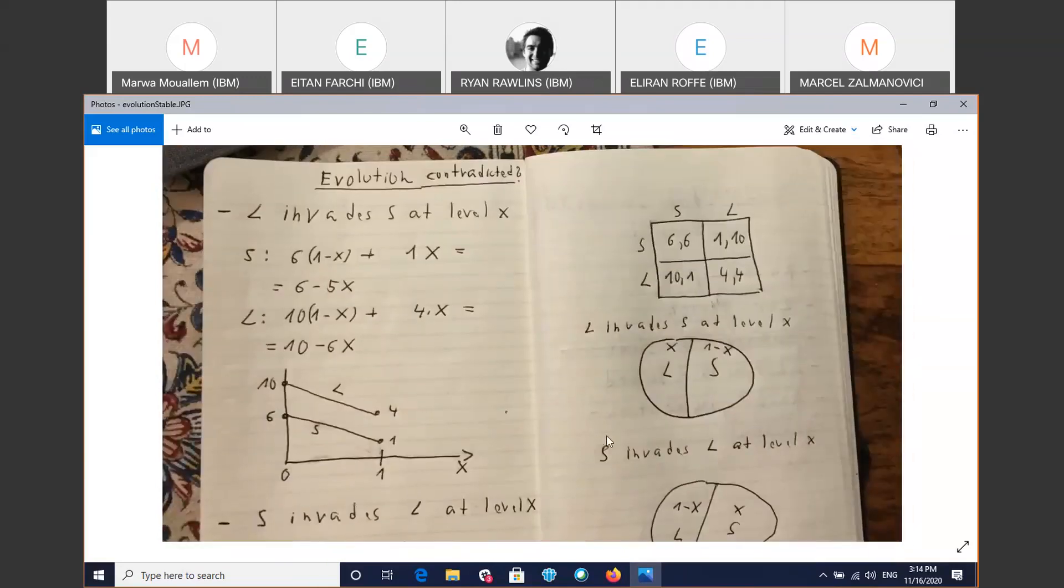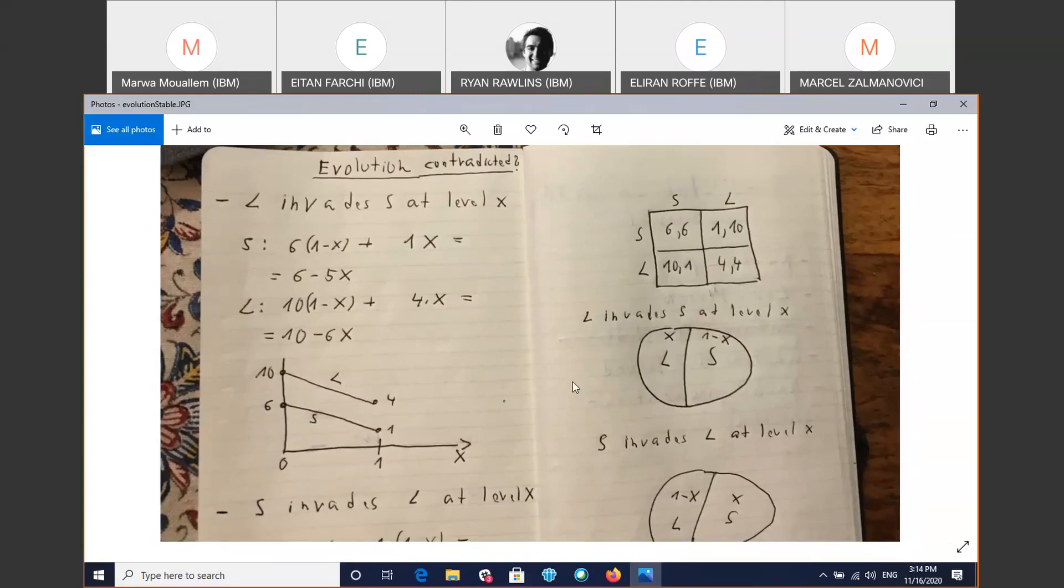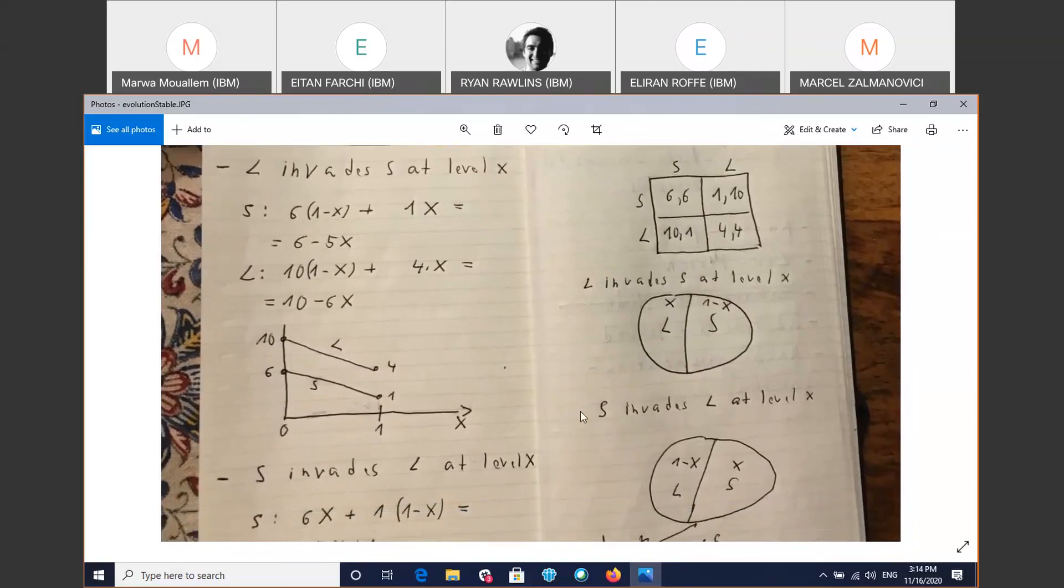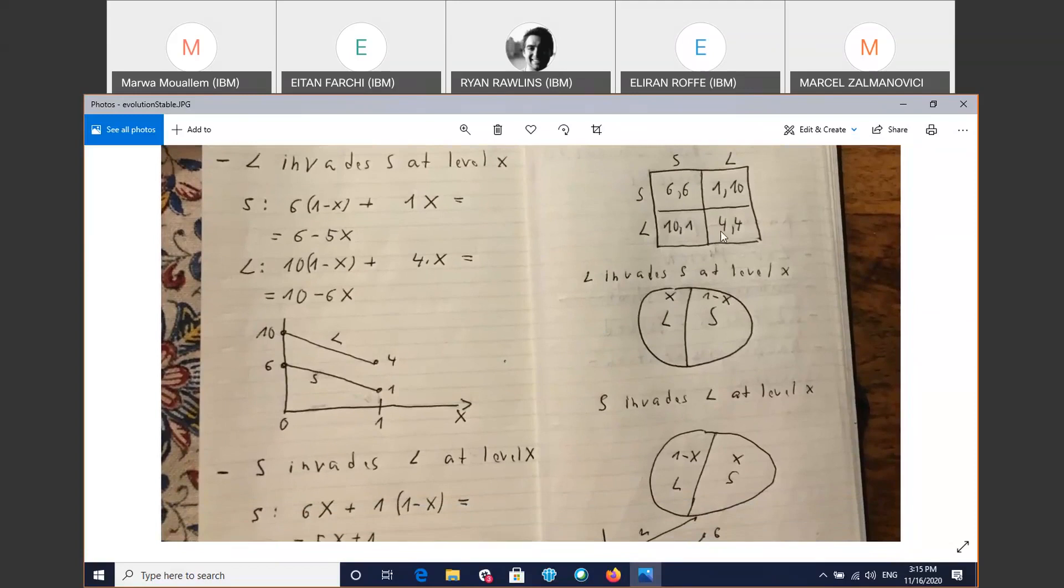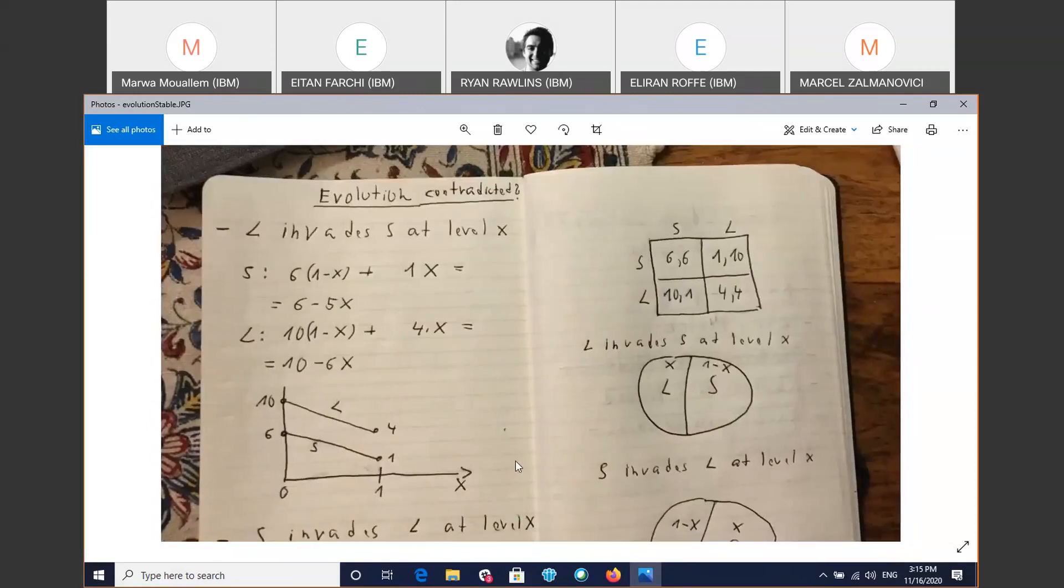But maybe the most interesting thing from an evolution theory point of view is that the species that emerged as the only species, the large, ended up with the fitness of 4, which is smaller than 6. So that kind of seems to be in contradiction to evolution ideas, because the fitness of the species grows. And here we converge to, say we started with S and L was introduced, so we converge to a lower fitness.